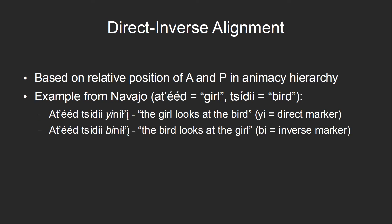There are other types of alignment that are more involved than just grouping subject, agent, and patient in different ways. We can also have direct-inverse alignment, where the marking is based on the relative position of the agent and the patient in the animacy hierarchy. This sort of alignment is fairly common in Native American languages. This example comes from Navajo. The noun with the higher animacy always has to come before the noun with the lower animacy, and which is the agent and which is the patient are indicated by whether the verb has a direct marker or an inverse marker. The direct marking indicates that the more animate noun is the agent and the less animate noun is the patient, while the inverse marking indicates the opposite.